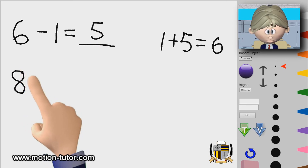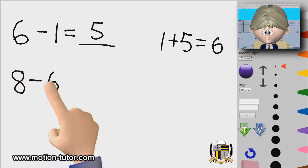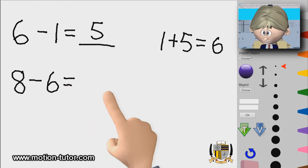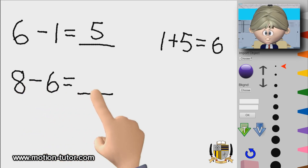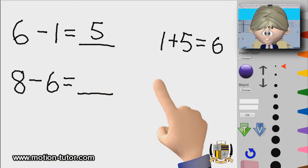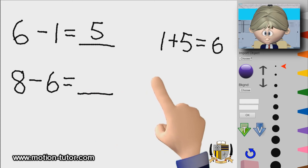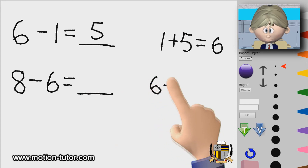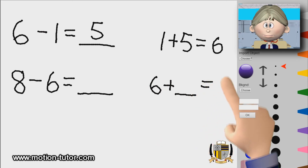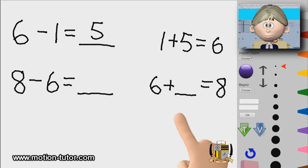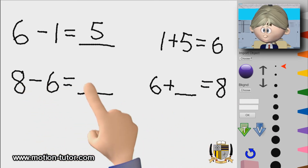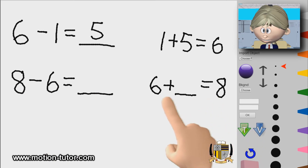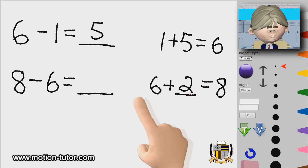Eight minus six — eight take away six — is what number? So eight minus six is a certain number. You can think: six plus a number will give me eight. I can pick up six and I know I need two more to get eight, so that means the answer is two.